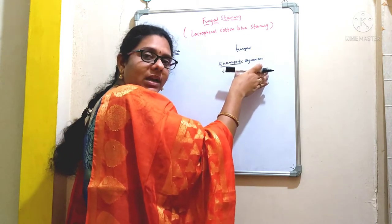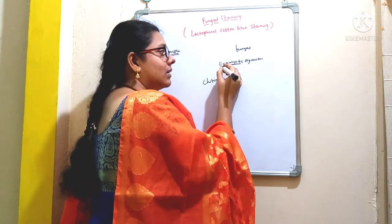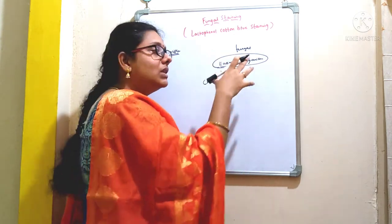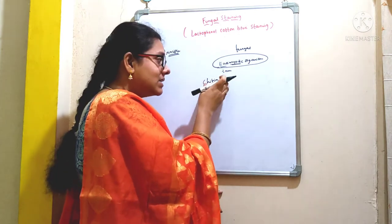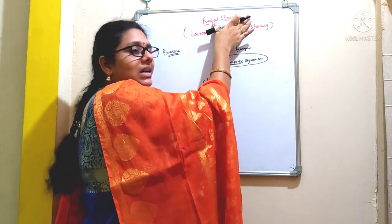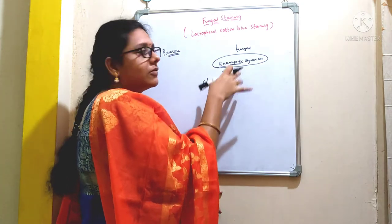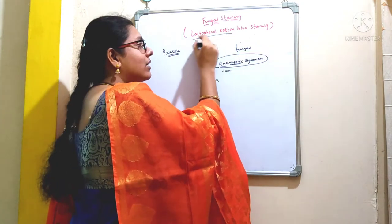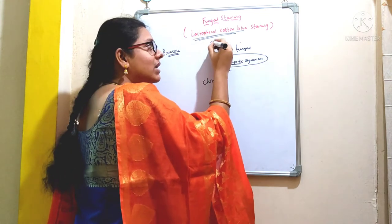The fungal organisms, which are eukaryotic, have a cell wall made up of chitin. These eukaryotic organisms will have both microscopic and macroscopic characteristics. As their cell wall is made up of chitin, with the help of this fungal staining method we are going to stain the cell wall components of a fungal organism. Lactophenol cotton blue acts as both a staining solution and a mounting solution.